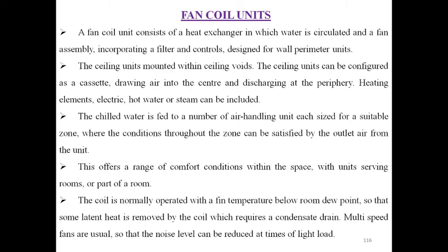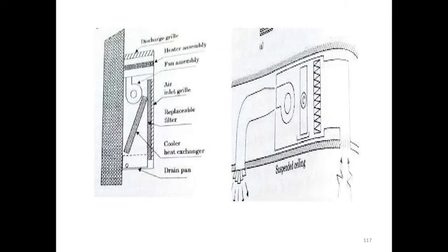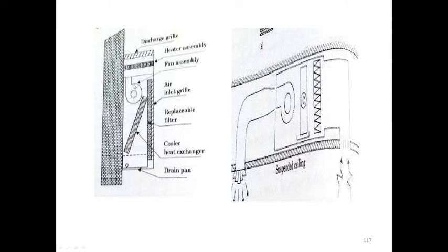The fan coil unit reduces heat energy and produces cooled air. The figure shows: the top layer is the discharge grill, followed by the heater assembly, fan assembly, and air inlet. Hot air enters as the inlet; cooling takes place inside. A dust filter can be replaced for pure fresh air inside.